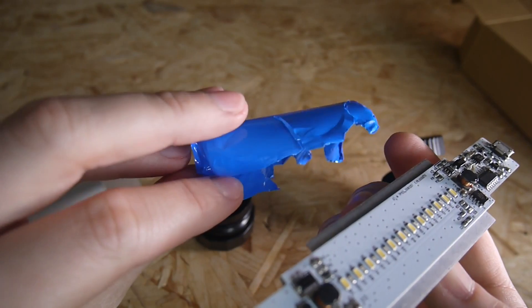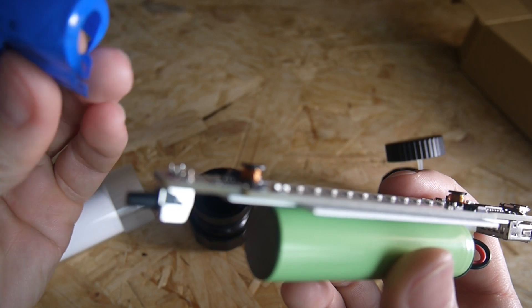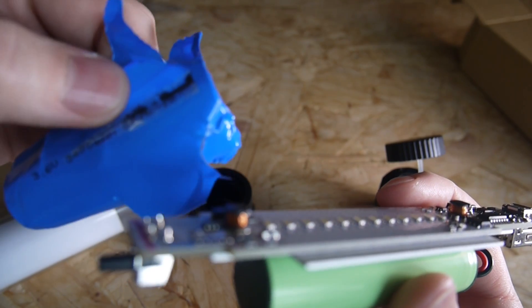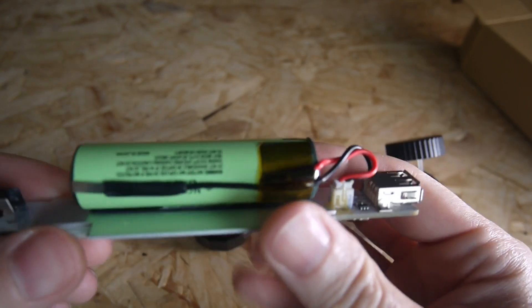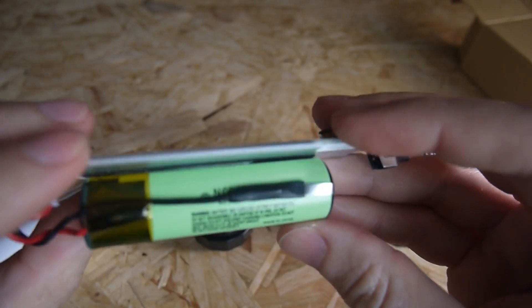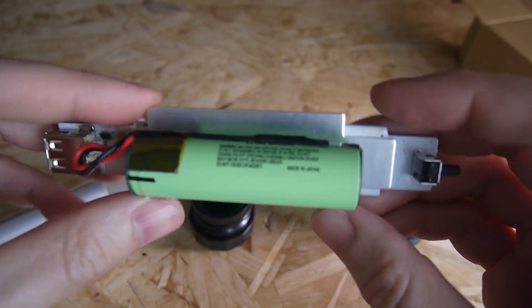It did have this sleeve on it, obviously to protect it, but I've removed that. It says 3.6 volts, 3400 milliamp hours. And it's definitely a Panasonic battery. I've got quite a few of these myself, which I've taken out of laptop batteries and that.